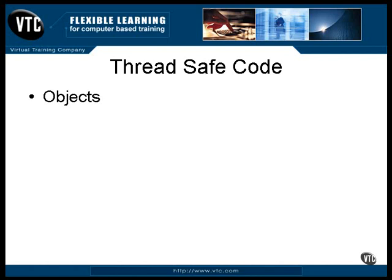Each user has his own object, so as long as all data items are instantiated for each object, there's no problem. The problem comes from things that are declared as static. Anything declared as static is shared by all objects of that class. That is, if you declare a variable as static, every object that uses that variable uses exactly the same one. It's actually stored in the class definition, and it's used from there.